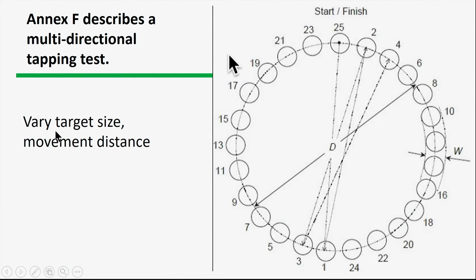Another version of the tapping task is in Annex F: the multi-directional task. The size of targets and movement distances are varied. The task involves tapping from target 1 to 2 to 3 to 4 to 5 to 6 to 7 to 8 — it's timed. There's a movement distance and a target width just like other Fitts' law calculations, and the advantage is that movement occurs in multiple directions. Performance measurement is time in milliseconds and error to the nearest millimeter.